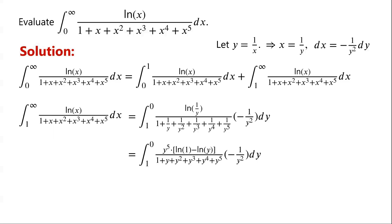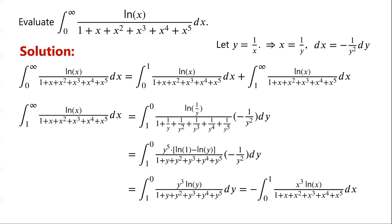So we can now write this equals the integral from 1 to 0 of y³ times ln(y) over 1 plus y plus y² plus y³ plus y⁴ plus y⁵, dy. Swapping the bounds and changing the sign of the integral, this equals negative integral from 0 to 1 of x³ times ln(x) over 1 plus x plus x² plus x³ plus x⁴ plus x⁵, dx, where we just renamed the variable from y to x.